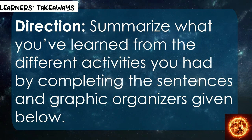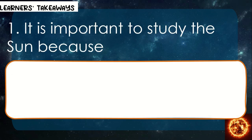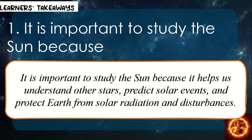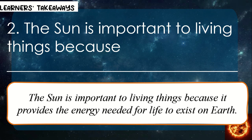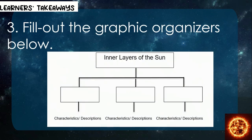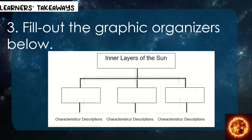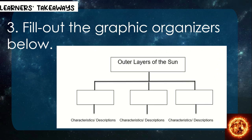Summarize what you've learned from the different activities by completing the sentences and graphic organizers given. It is important to study the sun because it helps us understand other stars, predict solar events, and protect Earth from solar radiation and disturbances. The sun is important to living things because it provides the energy needed for life to exist on Earth. Fill out the graphic organizers below: inner layers of the sun with their characteristics and descriptions, and then the outer layers of the sun with their characteristics and descriptions.